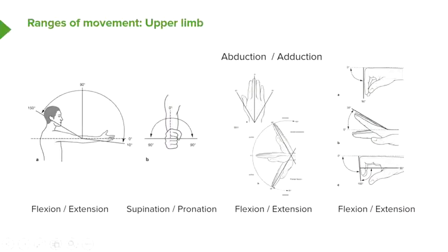Looking at the forearm and movements occurring at the elbow joint and at the wrist: at the elbow joint we have flexion and extension. We also have supination and pronation, where the forearm, from a mid-pronated position, can supinate so the palm faces upwards, or pronate so the palm faces downwards.